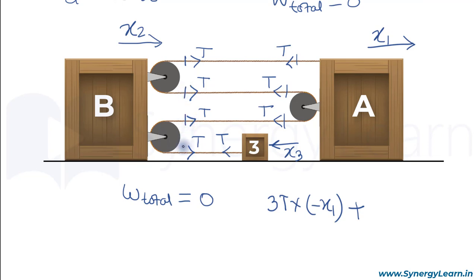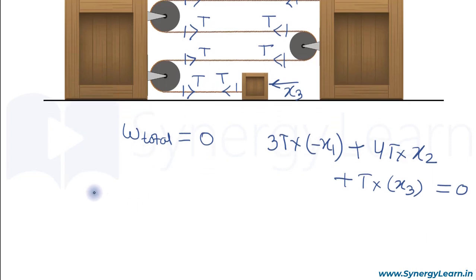T, T, T, T, and T, that is 4T into x2. Also, work done by the tension on the third block will be T into x3 because this tension T and x3 are in same direction, and total work done will be 0. Now solving this we have minus 3x1 plus 4x2 plus x3 equals to 0, which is the required constraint relation.